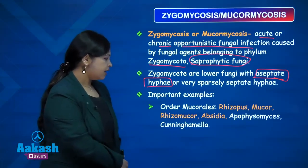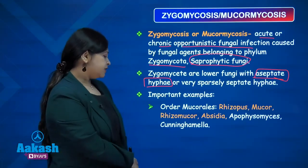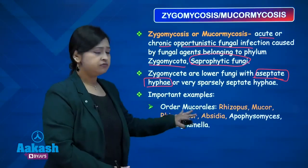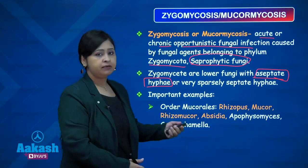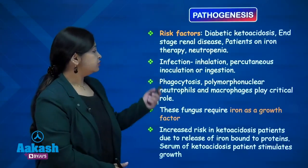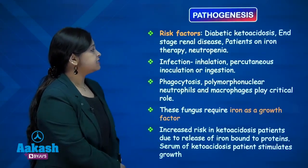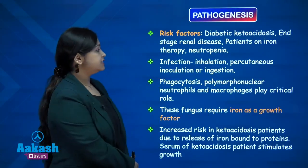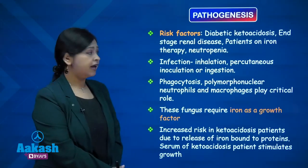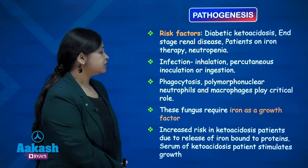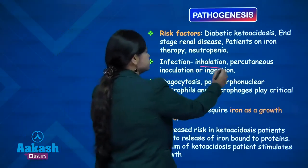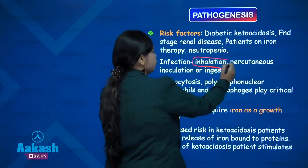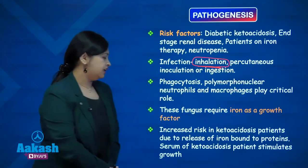Important examples are Rhizomucor, Rhizopus, Mucor, Rhizomucor and Absidia — these four names are very important. Coming to pathogenesis: risk factors include diabetic ketoacidosis, end-stage renal disease, patients on iron therapy, and neutropenia. Infection occurs mainly by inhalation, though inoculation or ingestion can also occur.